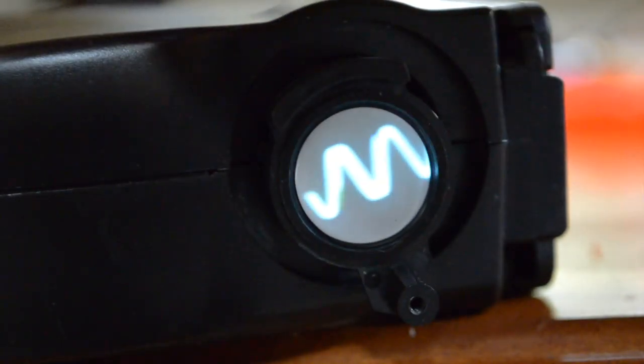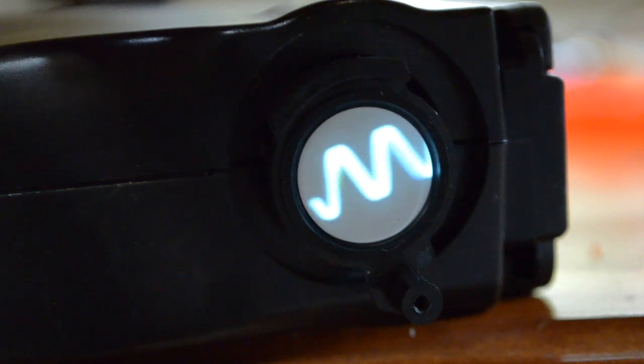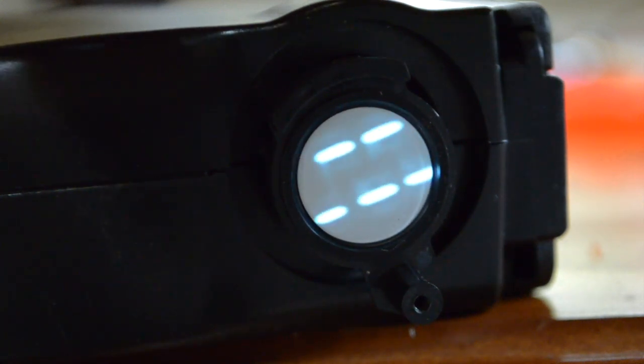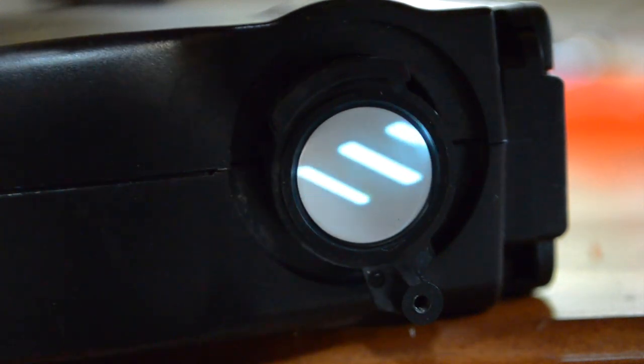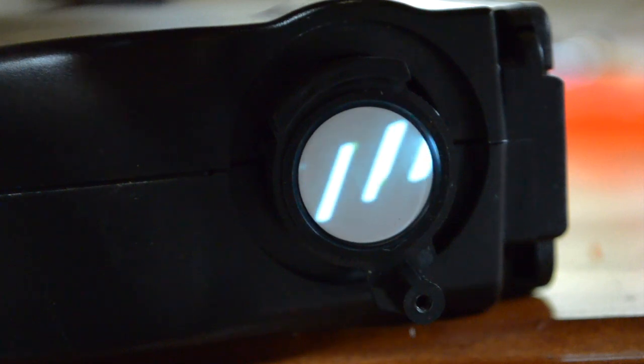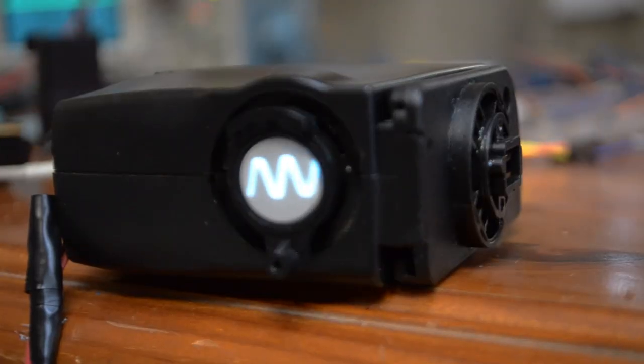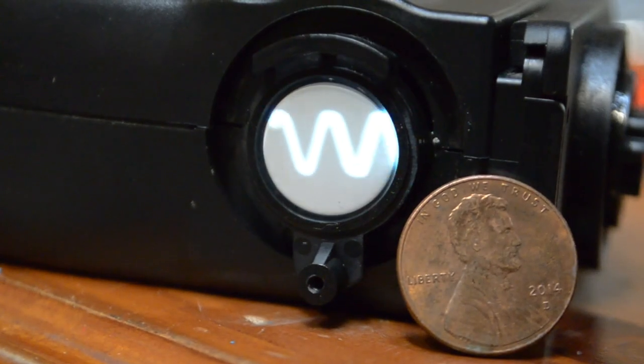So actually I'm pretty surprised about how clean of a signal it gives off. So there's our sine wave, there's our square wave, there's a triangle wave, there's a sawtooth facing left and there's a sawtooth facing right. This actually gives off a very clean signal. Much more than what I was expecting to be honest. So now you know how to make your very own pocket oscilloscope.